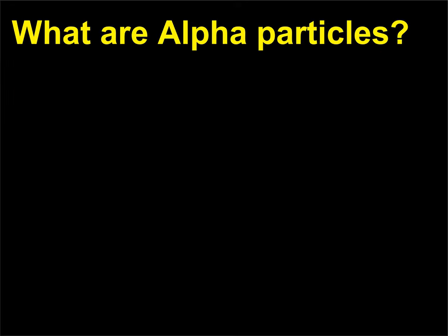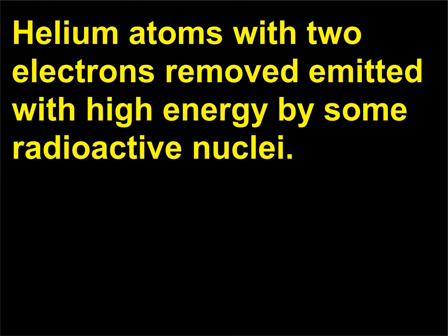What are alpha particles? Alpha particles are helium atoms with two electrons removed, emitted with high energy by some radioactive nuclei.